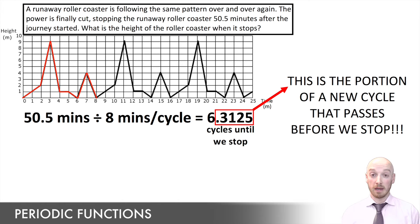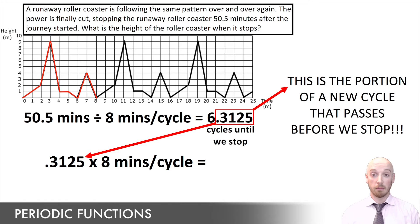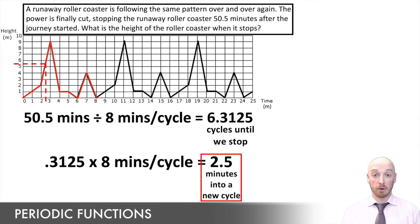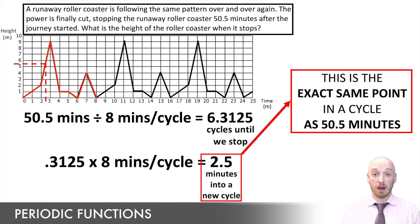To find how long in minutes 0.3125 of a cycle represents, we take just the decimal — 0.3125 — and multiply it by eight minutes. That gives us an answer of 2.5 minutes. This is how far into a new cycle the function is going to come to a stop. Looking at our graph, we can find out what the height of the rollercoaster is at 2.5 minutes, and remember, this represents the exact same height as at 50.5 minutes, because 50.5 minutes was 2.5 minutes into the start of a new cycle.